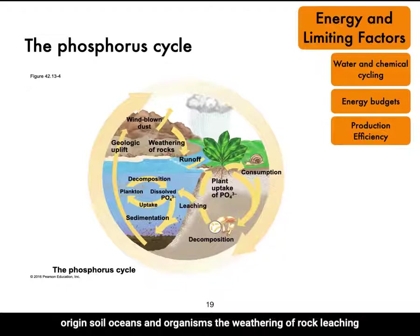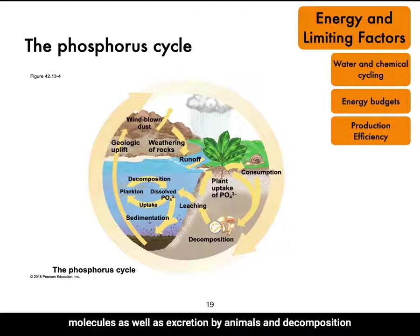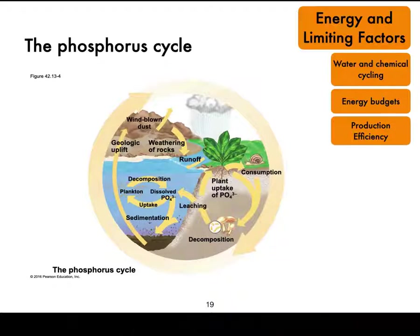The weathering of rock, leaching into ground and surface water, and incorporation into organic molecules, as well as excretion by animals and decomposition, are all important steps and parts of the phosphorus cycle.